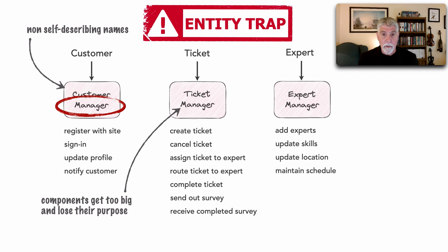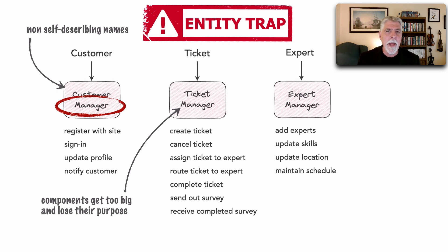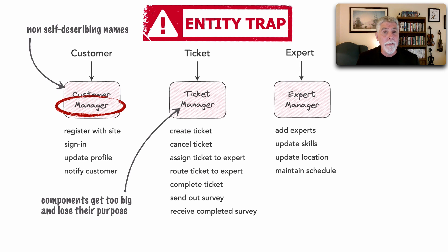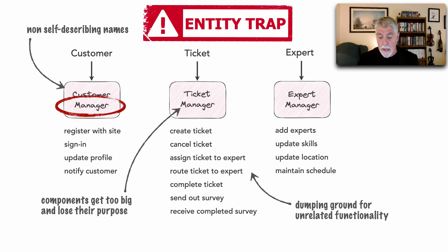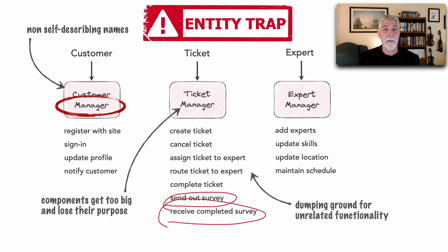The second problem is that these components, like Ticket Manager, can become too big. Everything that has to do with tickets goes under this single architectural component, and it really starts losing its purpose. How many of you during your experience as a developer have ever coded a utility class — maybe utility.cs or util.java? Well, that's very similar to the entity trap, because these components just become a dumping ground for unrelated functionality. A really good example is that the Ticket Manager is sending out a survey and then receiving that survey from a customer — yes, it has to do with tickets, but we really had no other place for it.